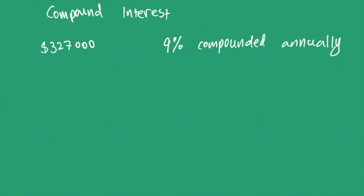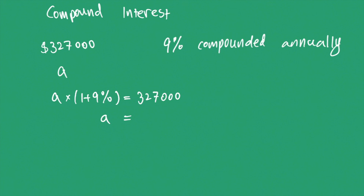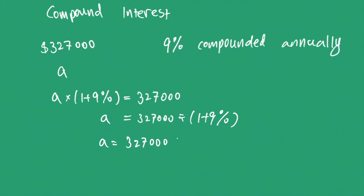The question is: what's the original amount of money that I borrowed? We can set the original amount as A, and we get the equation: A times one plus 9% equals $327,000. Then we move the one plus 9% to the right side of the equation: A equals $327,000 divided by one plus 9%, which is $327,000 divided by 1.09. A equals $300,000.